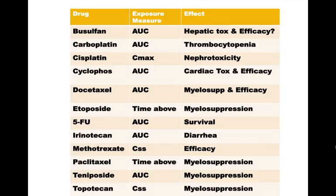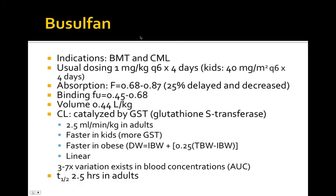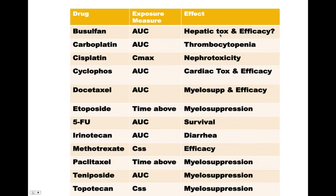Let's think about how kinetics might be able to help us in actually dosing the drugs given to treat cancer. This is a partial list of chemotherapeutic agents that have been able to have a kinetic parameter tied to a certain outcome. For example, busulfan has been shown to have an area under the curve that correlates well with hepatic toxicity and also with efficacy. Area under the curve is a really good measure of exposure, so it's not surprising that we can use it to guide dosing — relating to both attaining efficacy and avoiding toxicity.